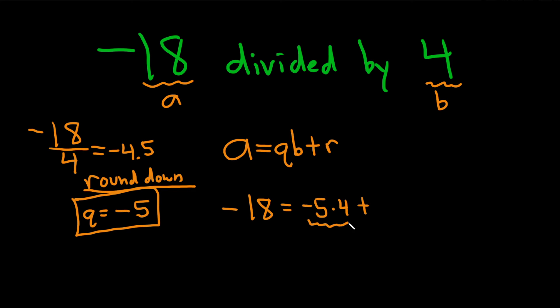So this is actually negative 20. So what do you add to negative 20 to get negative 18? Well, positive 2. So that's going to be our R. Our R is positive 2.